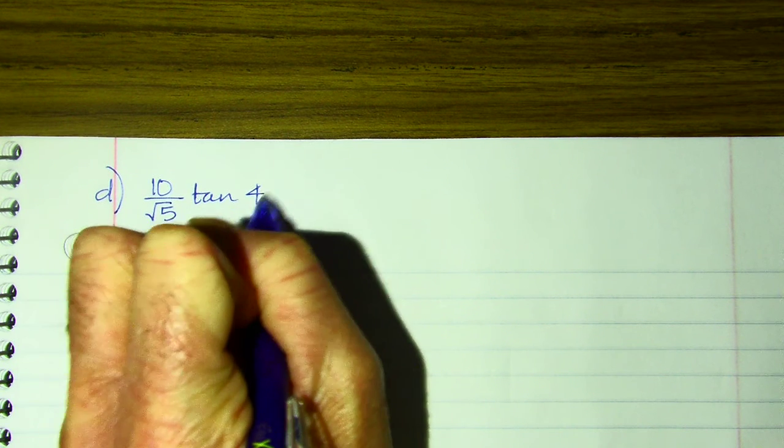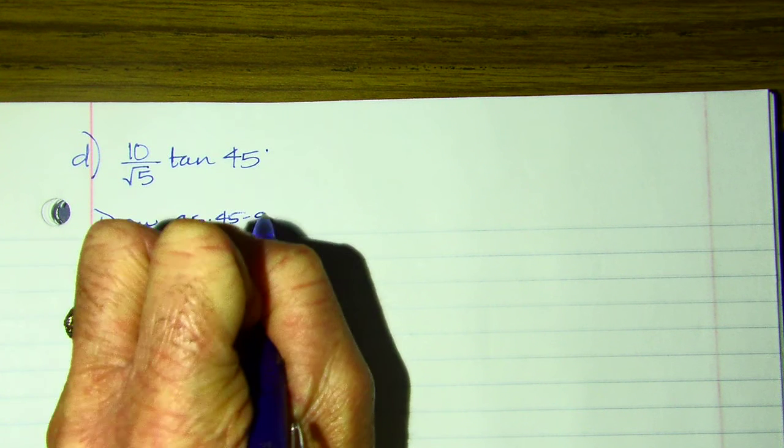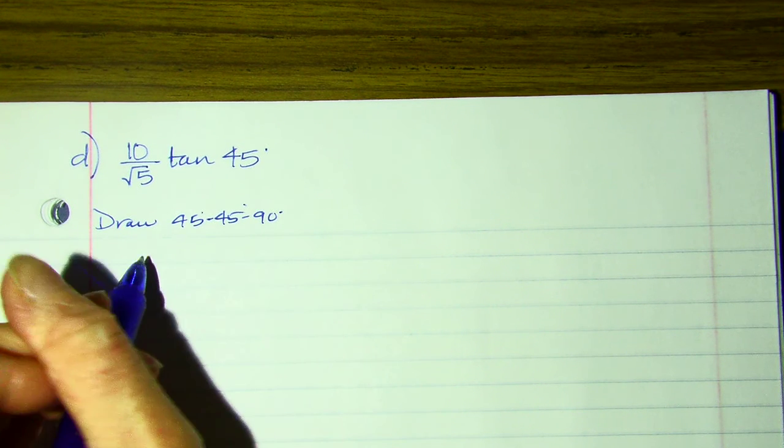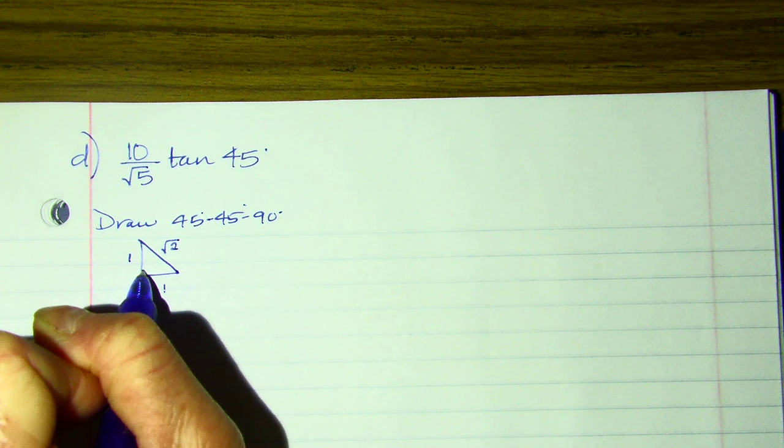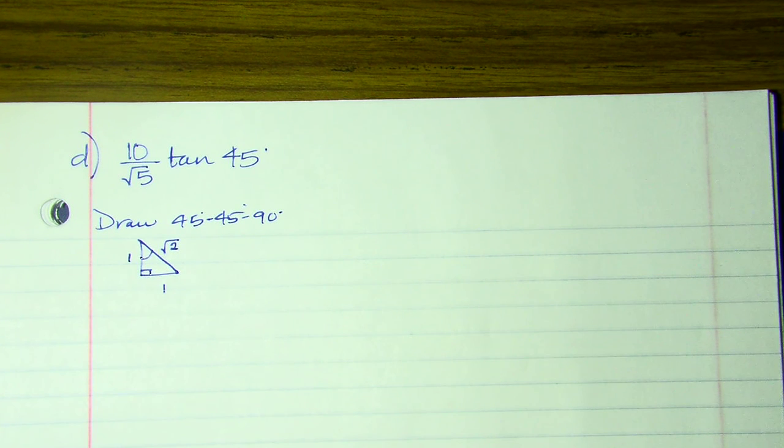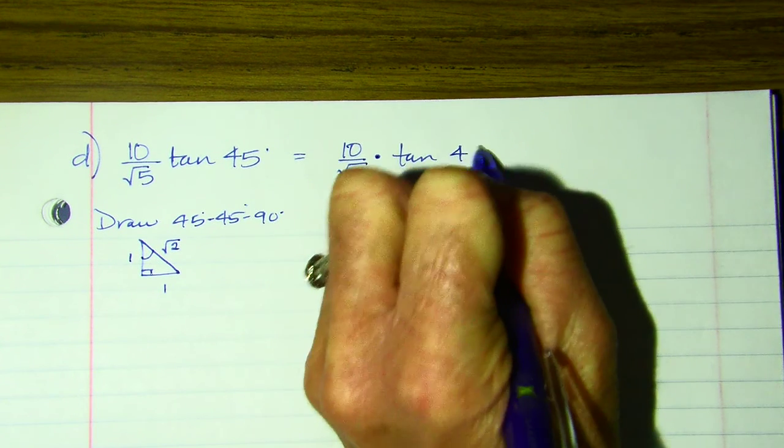All right, next one. A couple more. That's what this whole section is on. There's no A, B, and C. It's simply you practicing evaluating using your reference triangles. So next one, evaluate 10 over root 5 times the tangent of 45. All right, so right away I'm going to draw my 45. Again, you don't have to draw it every time. You're going to learn you can write it once on the top of your homework and reference it. So if I draw my 45-45-90, I've got 1, 1, root 2.